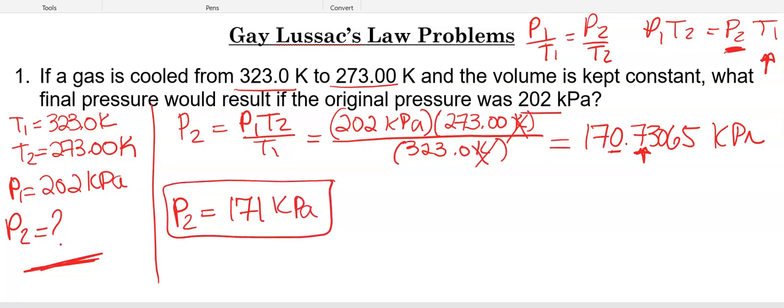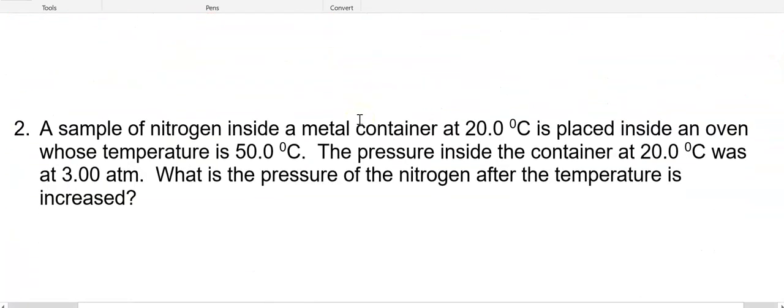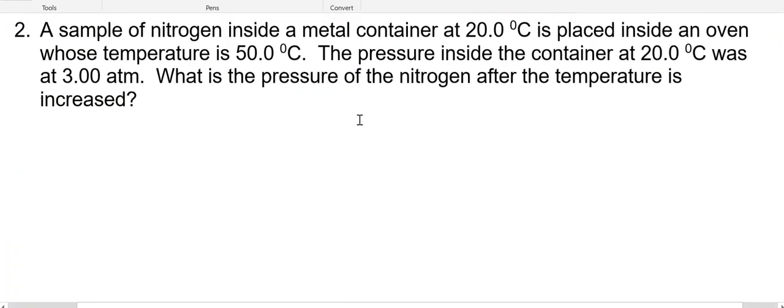Now we always do our check in our fun pen. And so remember that pressure and temperature are directly related. So what happened? Our temperature went from 323 to 273. So temperature went down, so that means that pressure should also have gone down. Our initial pressure was 202, and our final pressure is 171. Pressure did go down, so it was good. Now I'm going to scroll.